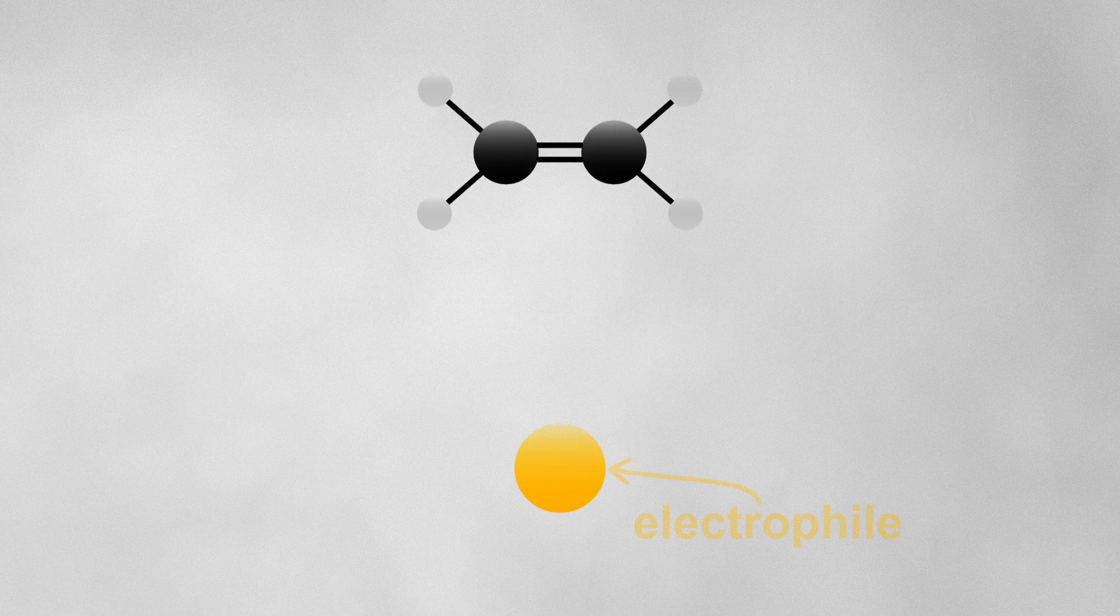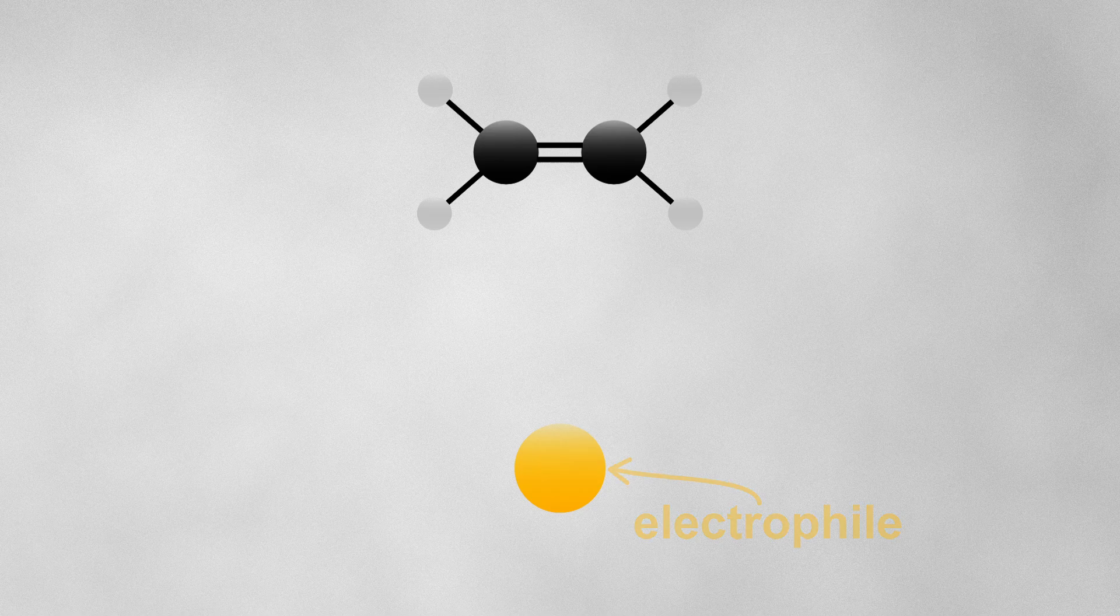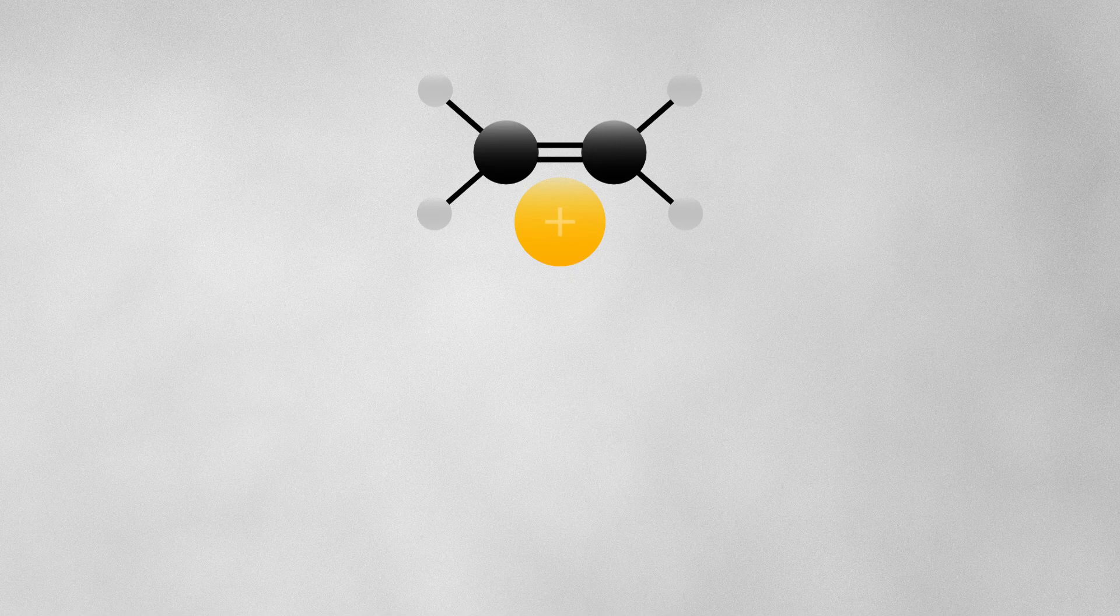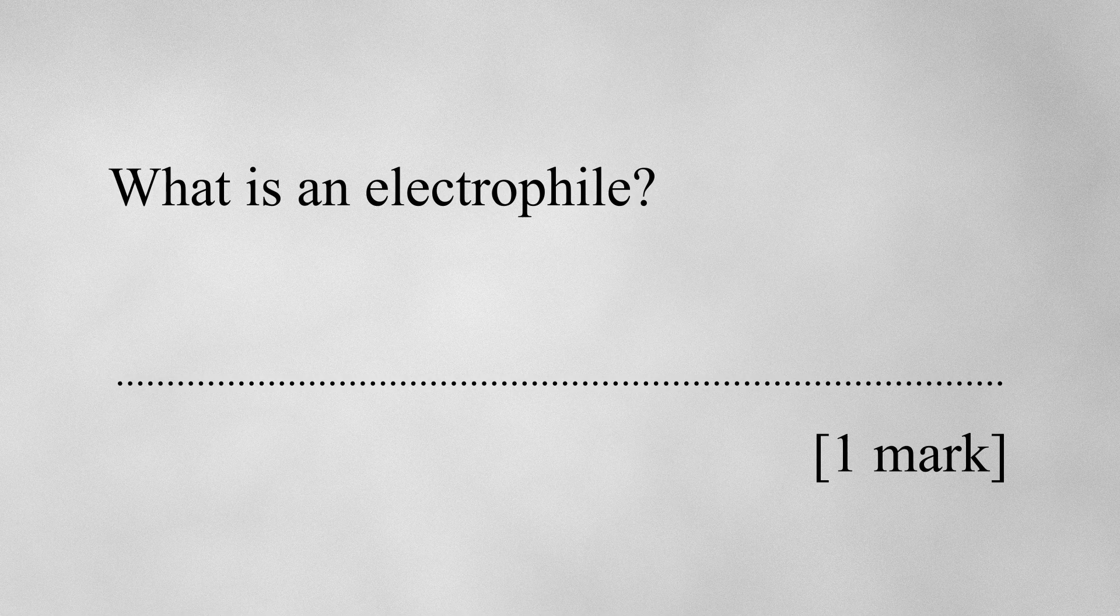If a species is described as an electrophile, it means that it will be attracted to negatively charged electrons. And hence, an electrophile must itself be positive, or in some way, electron deficient. If asked in an exam what an electrophile is, the best way to answer is that an electrophile is an electron pair acceptor.